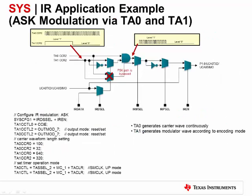This example shows a picture of the basic setup for ASK modulation, using TA0 to generate the carrier and TA1 to generate the envelope. As you can see, TA0 CCR2 is set up as a PWM for the carrier waveform at a much higher frequency than TA1 CCR2. The TA1 CCR2 signal generating the envelope is ANDed with the TA0 CCR2 carrier to produce the final waveform. There are many other ways to configure the IR generation according to your needs for encoding and resources available.